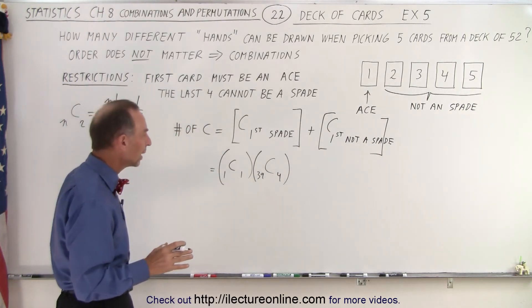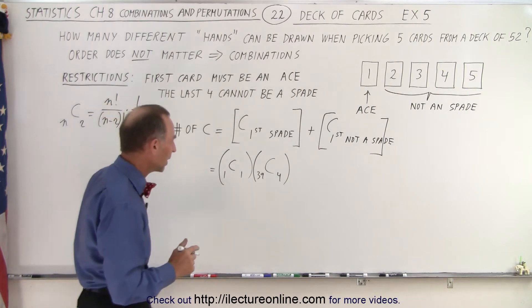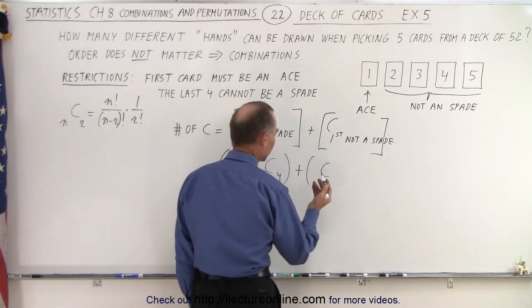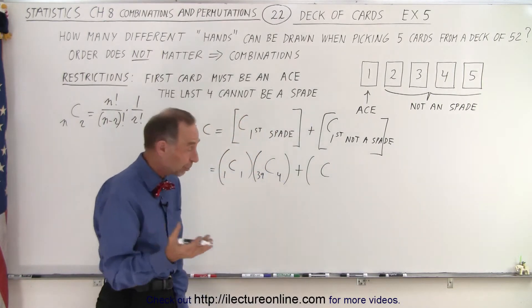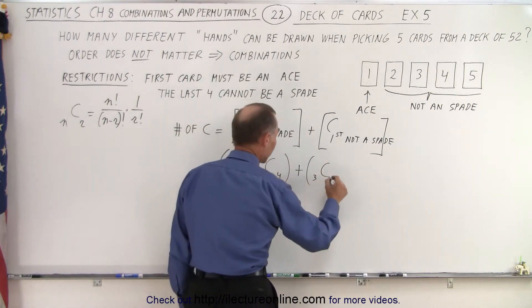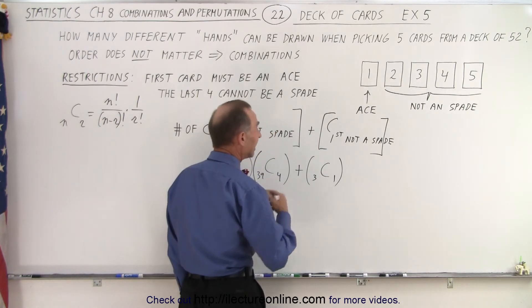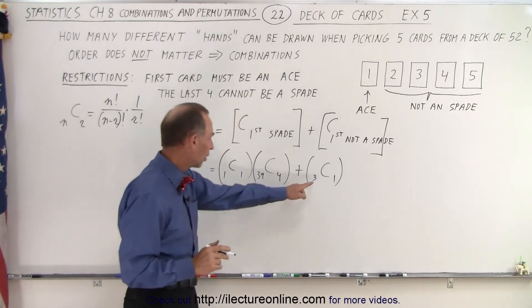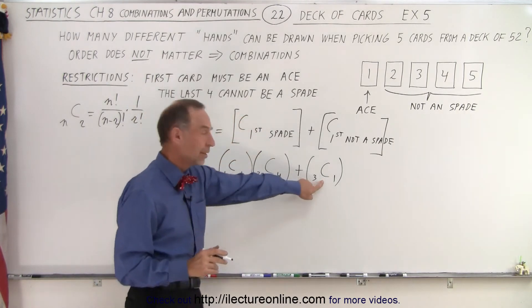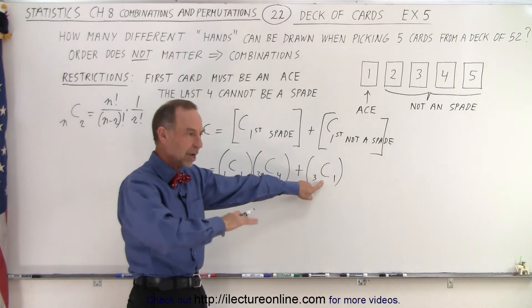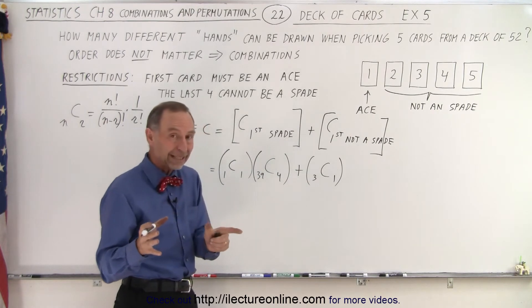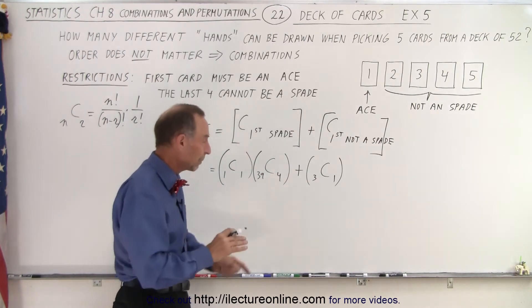Now, what happens when we don't pick a spade on the first card? So, plus the number of combinations, well, how many aces are there that are not spades? Well, there's three of them, and we're going to pick one out of those three. And then, let's see here. How many cards are left? The one card that we picked, right here, that's not a spade, that's now gone. Which means there's now 51 cards left.